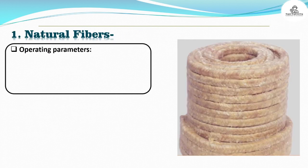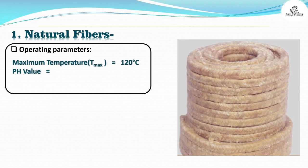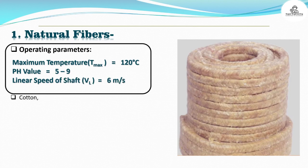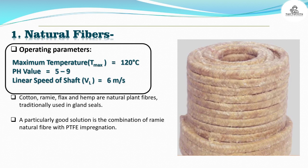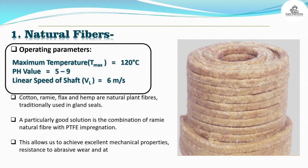1. Natural fibers. Operating parameters: Maximum temperature (TMX) is equal to 120 degrees Celsius. pH value is equal to 5 to 9. Linear speed of shaft (VL) is equal to 6 meters per second. Cotton, remy, flax and hemp are natural plant fibers traditionally used in gland seals. A particularly good solution is the combination of remy natural fiber with PTFE impregnation.